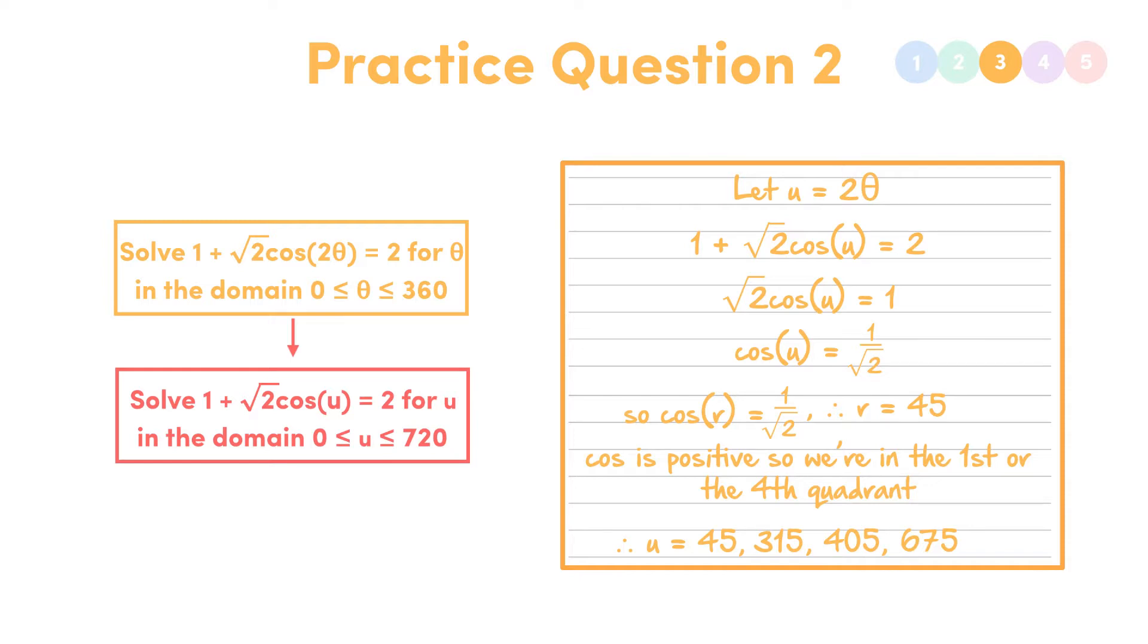Okay, sure, that's fair enough. So u equals 45, 315, 405 or 675. So now we're done, right?